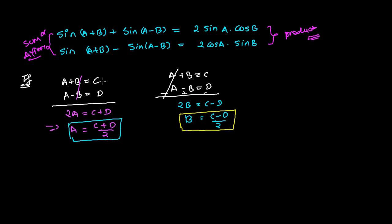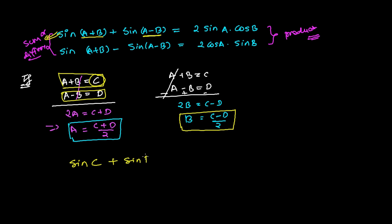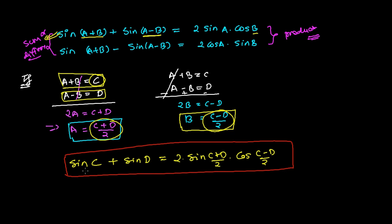Now let's replace everything in c and d form. This first equation becomes sine of a plus b, which we imagined as c, plus sine of a minus b, which is d. So sine c plus sine d equals twice of sine a, where a is (c plus d)/2. So that gives us: sine c plus sine d equals 2·sine((c plus d)/2)·cosine((c minus d)/2). This is the new formula to convert the sum form of the sine expression into the product form.